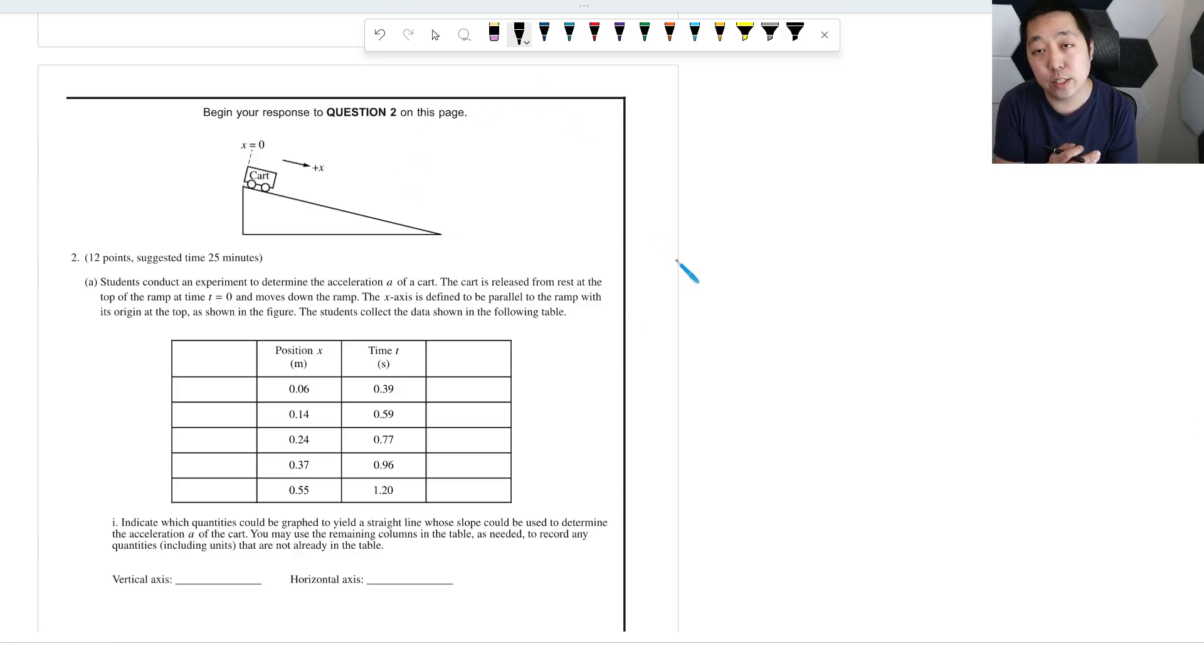All right, so here's the second question. FRQ 2 from the 2023 AP Physics 1 exam. This is the released FRQ. If you have a different one, then it's not being released. There's no solutions out there. So these are my best guess of the solutions. If I have any mistakes, I will put as a pinned comment below.